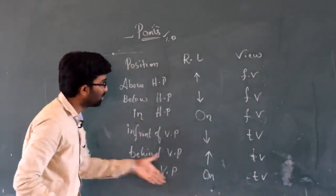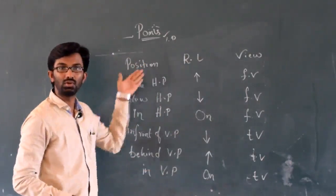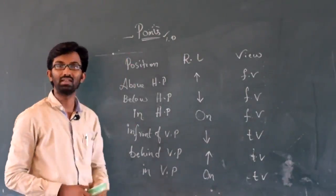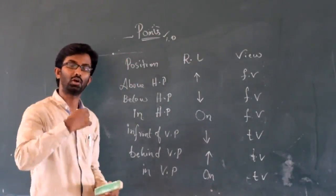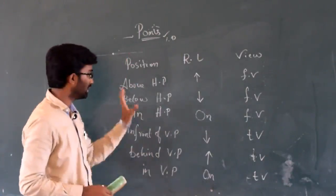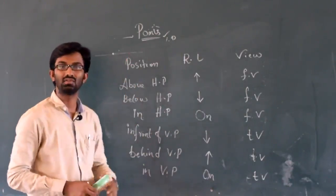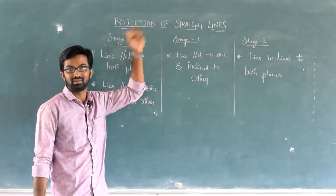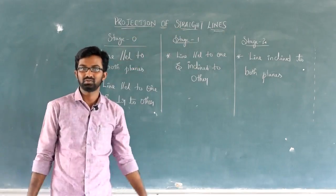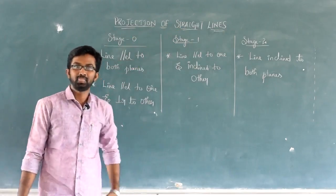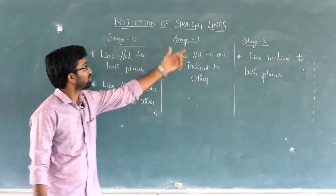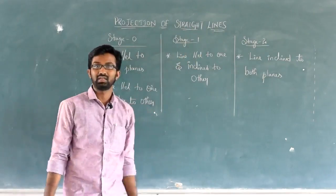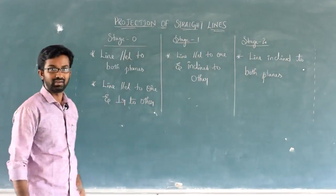Generally, if you take a look at this table, if you don't have a problem with this topic, it will be easy to solve. So I choose this one. Projection of straight lines is a topic with three categories that I have adjusted.